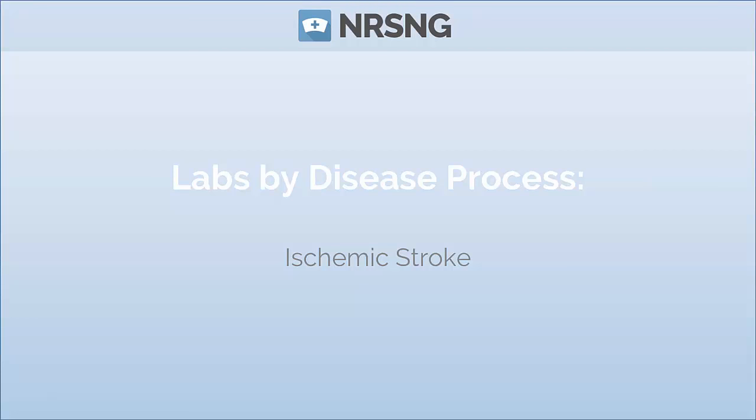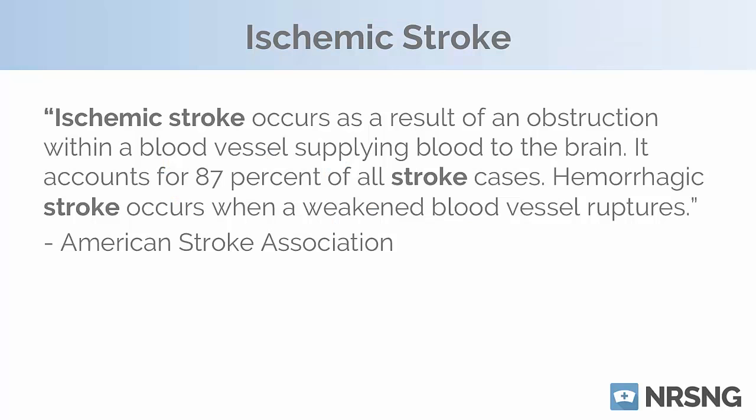We're going to be talking about ischemic strokes and some of the labs that physicians order when a patient presents with an ischemic stroke. According to the American Stroke Association, an ischemic stroke occurs as a result of an obstruction within a blood vessel supplying blood to the brain, and it accounts for 87% of all strokes. Hemorrhagic stroke occurs when a weakened blood vessel ruptures.